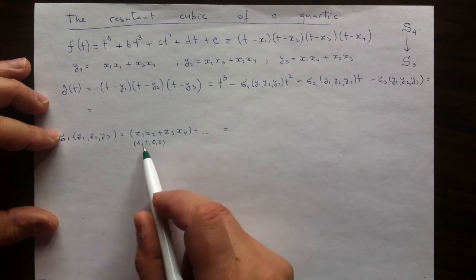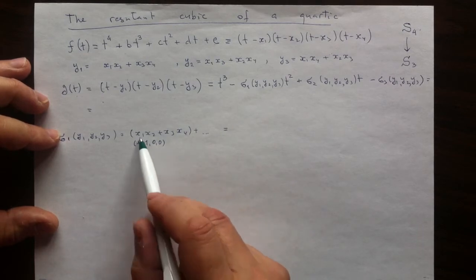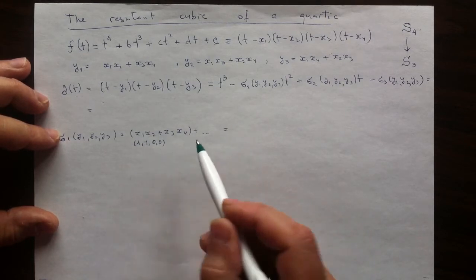The method says list all smaller vectors, and there are none. So that must be an elementary symmetric function. And it is.